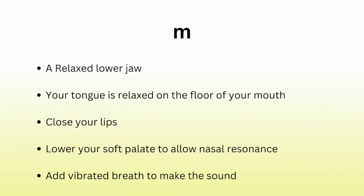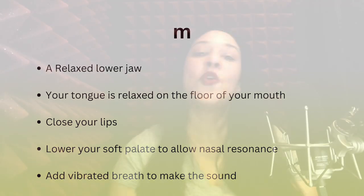So on that note, let's jump in with the first nasal continuant, m. The placement for the correct pronunciation of m is a relaxed lower jaw, your tongue relaxed on the floor of your mouth, you close your lips, you lower your soft palate to allow nasal resonance, and you add vibrated breath to make the sound. That's the proper placement for the consonant m. Now let's just try saying it a few times.